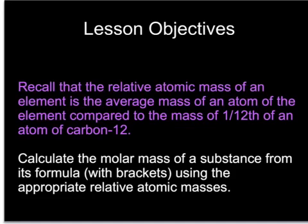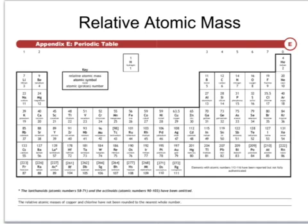First we're going to return to where we get the masses of atoms from, something called the relative atomic mass, which isn't always exactly the same number as the mass number. We often use the periodic table such as this one to work out the number of subatomic particles in a particular element, for example boron. Its proton number — the bottom number here — is 5. That tells us the number of protons. The number of electrons in boron is exactly 5 because the number of protons is the same as the number of electrons.